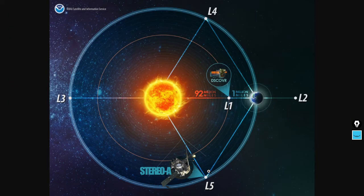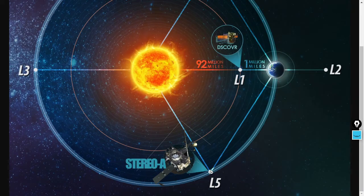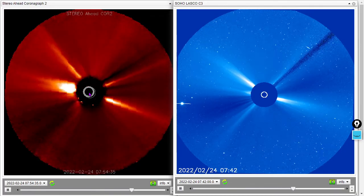Next, the coronagraphs. We are expecting a coronal mass ejection on the far side of the sun. Here's the view from STEREO-A on the left and the LASCO C3 on the right. There's STEREO-A.